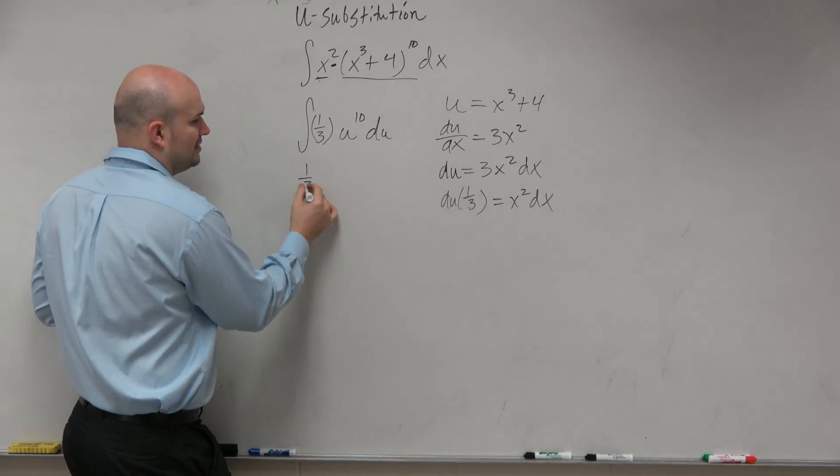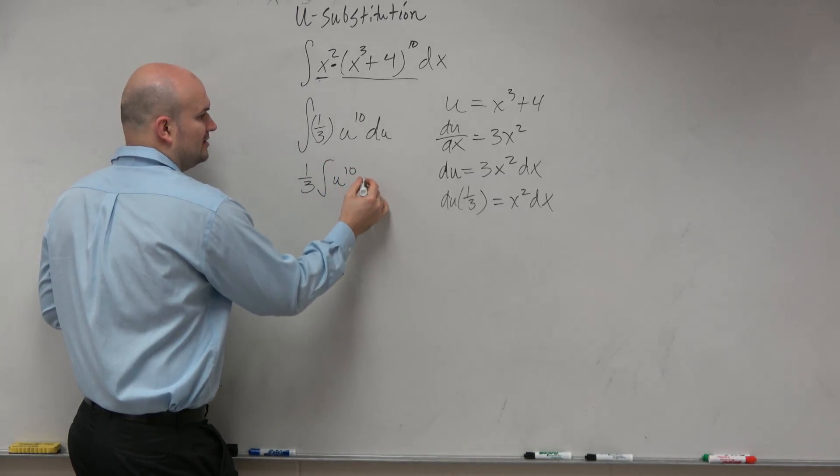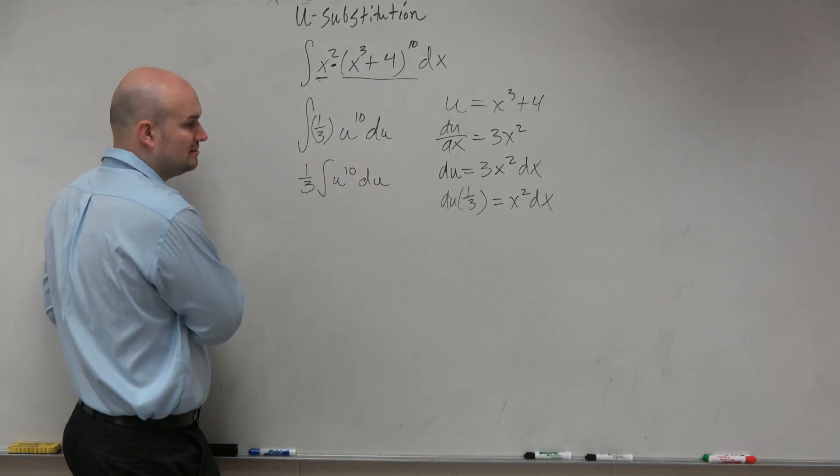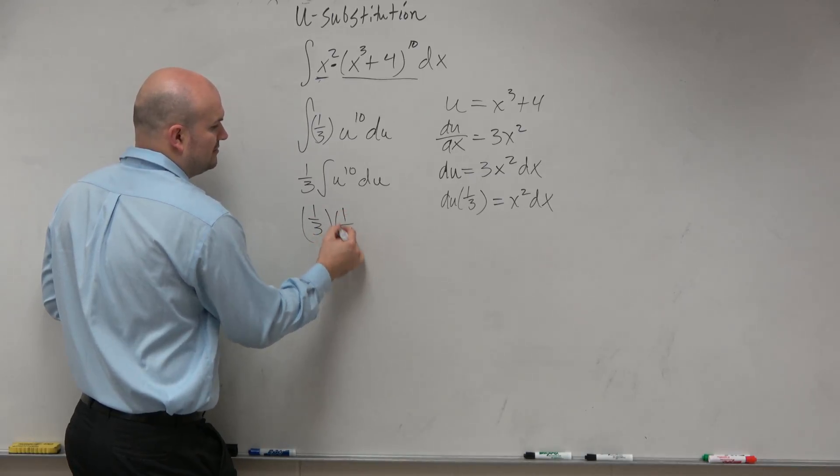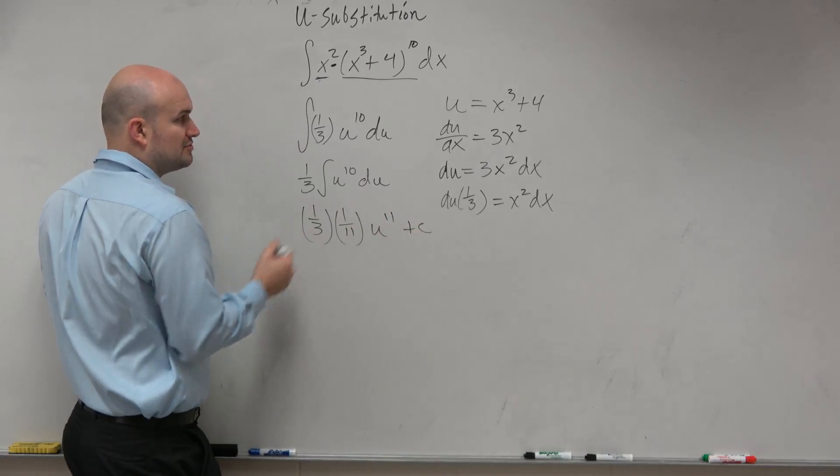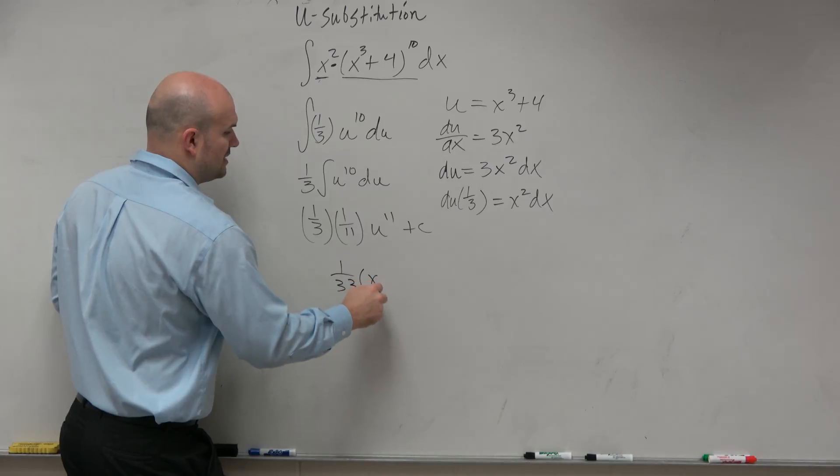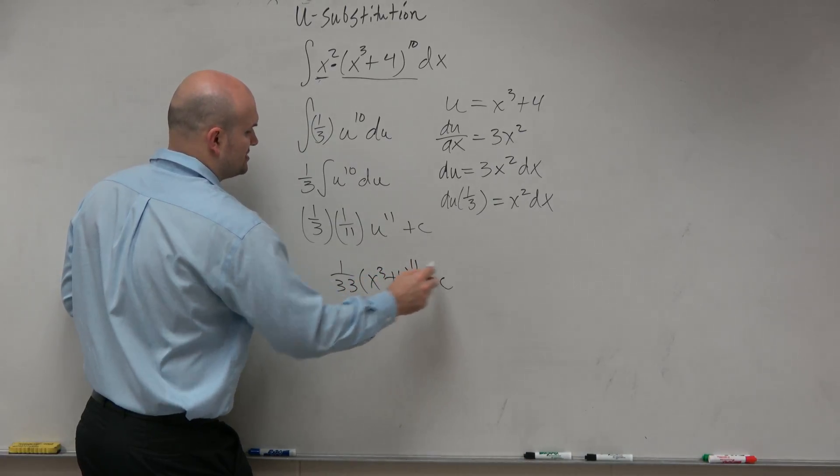I could bring out the 1 third. And therefore, I'm basically just integrating u to the 10th du. Well, that's not that hard, right? That's going to be 1 third times 1 over 11 times u to the 11th plus c. Then I just replace back my u. I get 1 over 33 times x cubed plus 4 to the 11th power plus c.